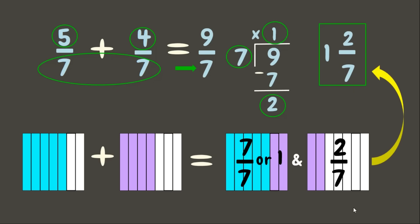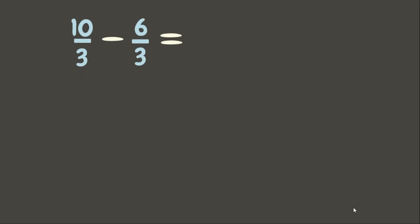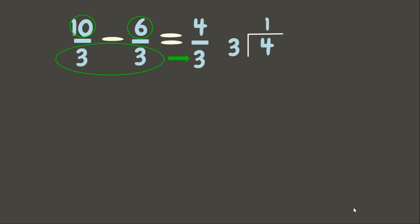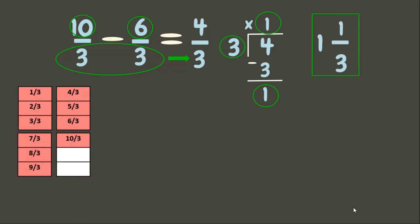Now let's try ten-thirds minus six-thirds. Ten minus six is four; copy the denominator three. Since our answer is also an improper fraction, let us divide four by three. Our final answer is one and one-third. Let me show you the representation.